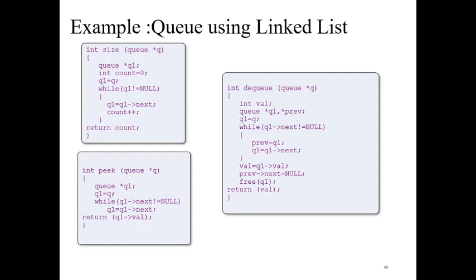And to dequeue, we have to check in the while loop. In the condition if Q is the next element is not equal to null or nothing. And the previous would be Q.